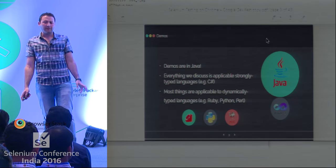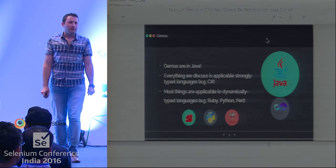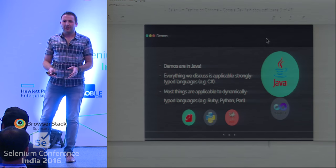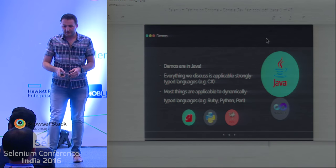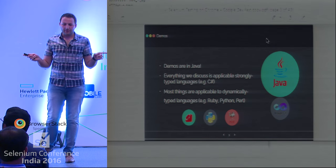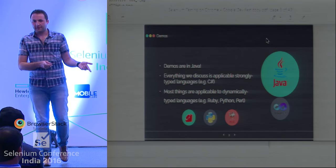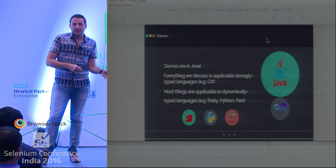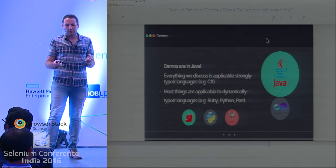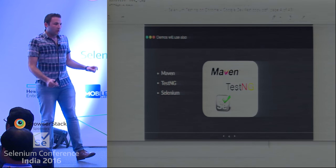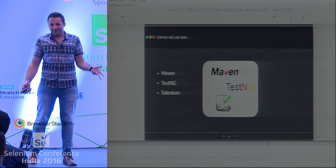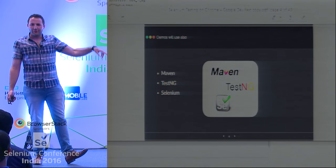The demos I will provide will be coded in Java, and as an example I used the GitHub UI interface. We will try to log in and check for an exception or error message. Everything I present will be applicable in strongly-typed languages like C#, and most things will also be applicable in dynamic-type languages like Ruby or Python. I will use Maven, TestNG, and of course Selenium — so everyone should have basic knowledge of these.